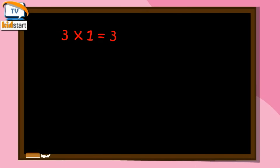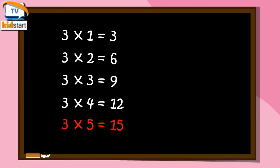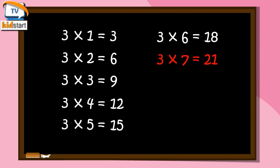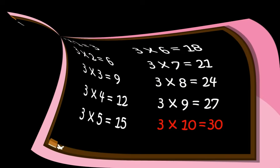3 ones are 3. 3 twos are 6. 3 threes are 9. 3 fours are 12. 3 fives are 15. 3 sixes are 18. 3 sevens are 21. 3 eights are 24. 3 nines are 27. 3 tens are 30.